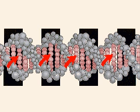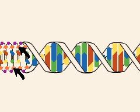A double helix. The diagram shows first that each strand is composed of alternating deoxyribose sugar, shown in orange, and phosphate molecules, represented in purple.